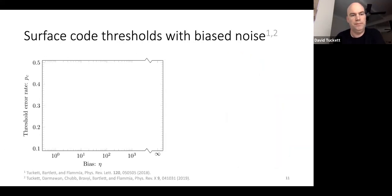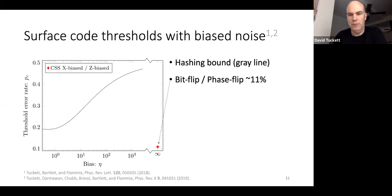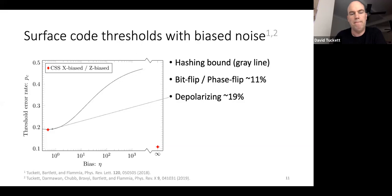Here I'm plotting threshold error rate on the y-axis and bias on the x-axis on a logarithmic scale, along with the hashing bound. For pure X or Z noise at infinite bias, we get an 11% threshold. For depolarizing noise at eta equals one-half we get about 19%. Filling in the gaps, the threshold error rate falls quite quickly with increasing bias — by a bias of 10, it's already down near 11%.